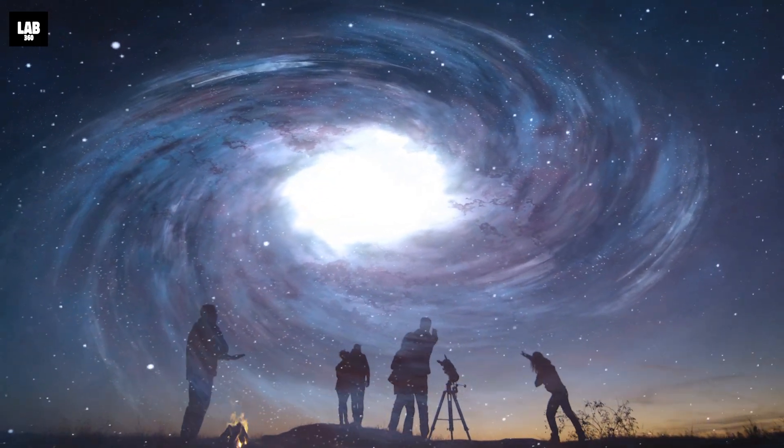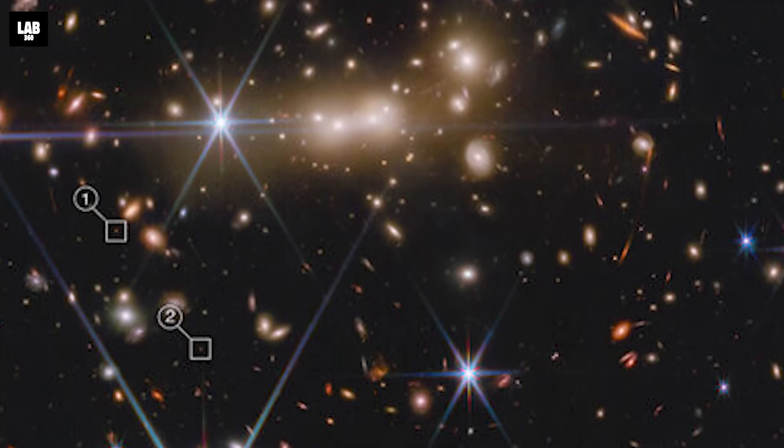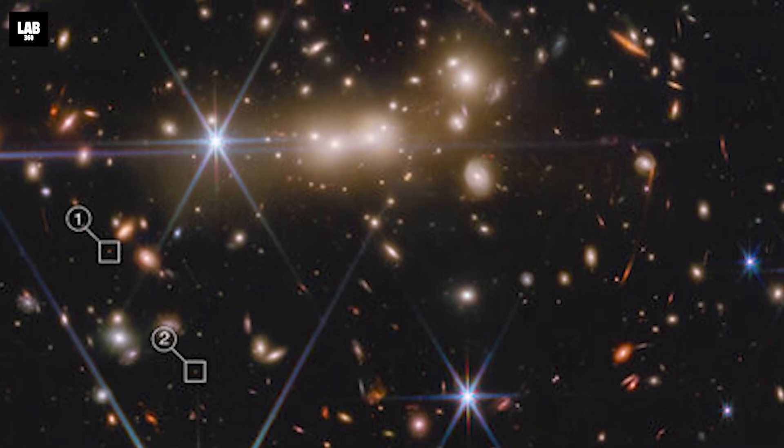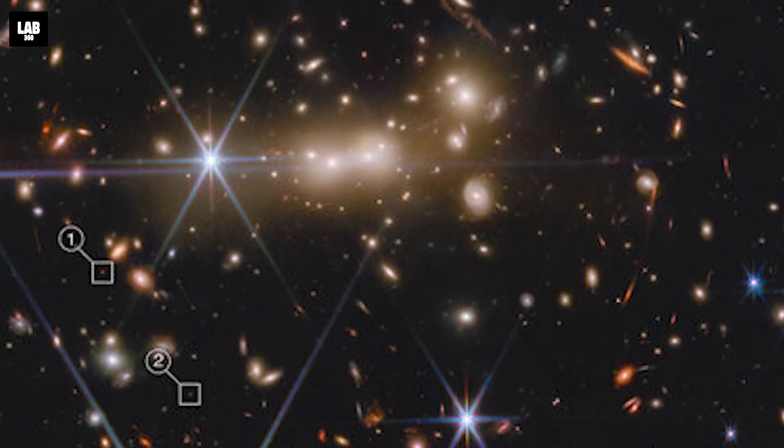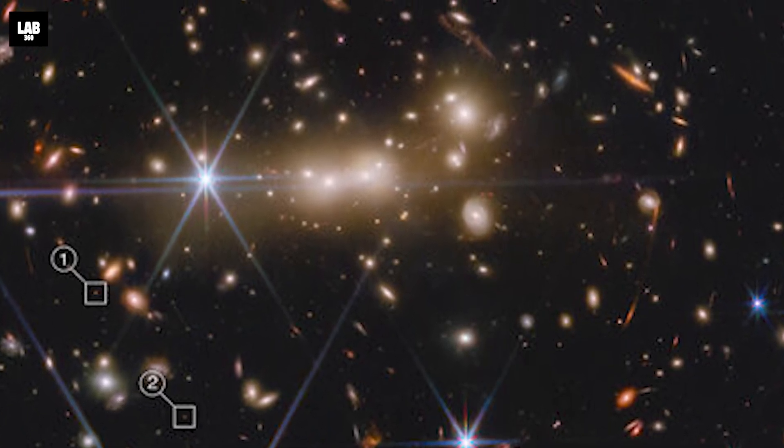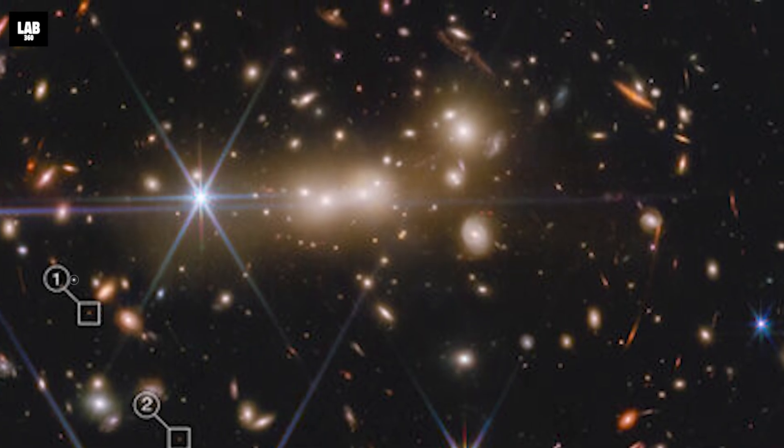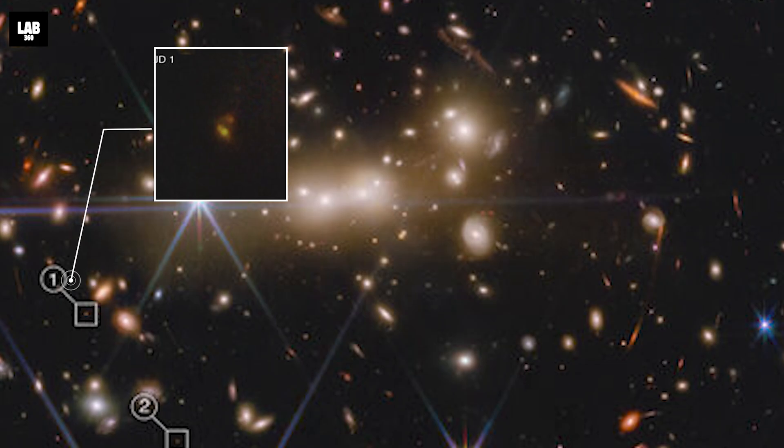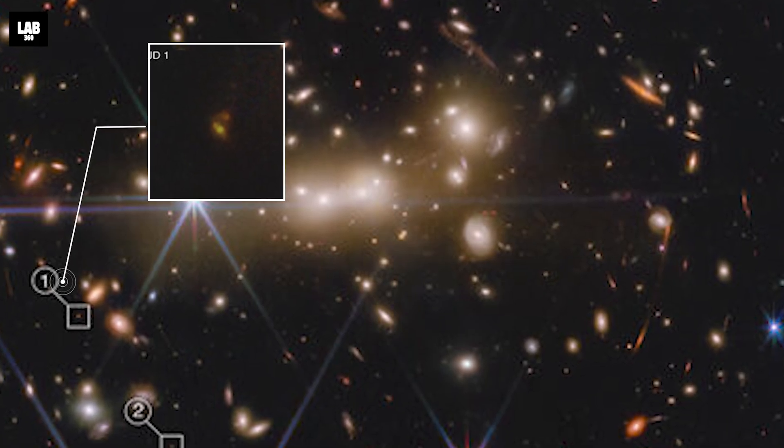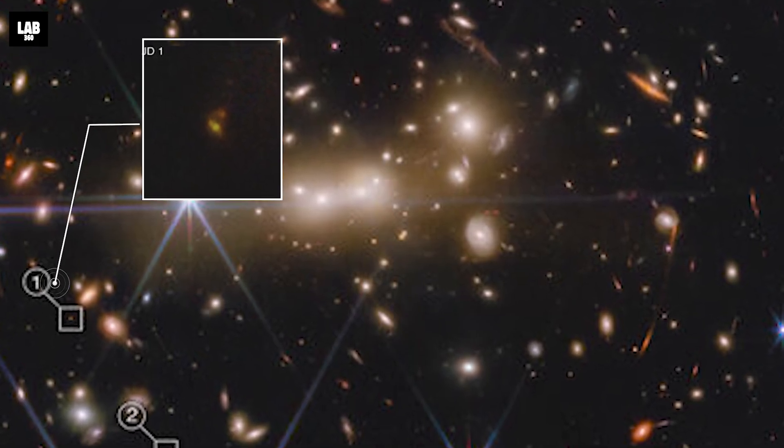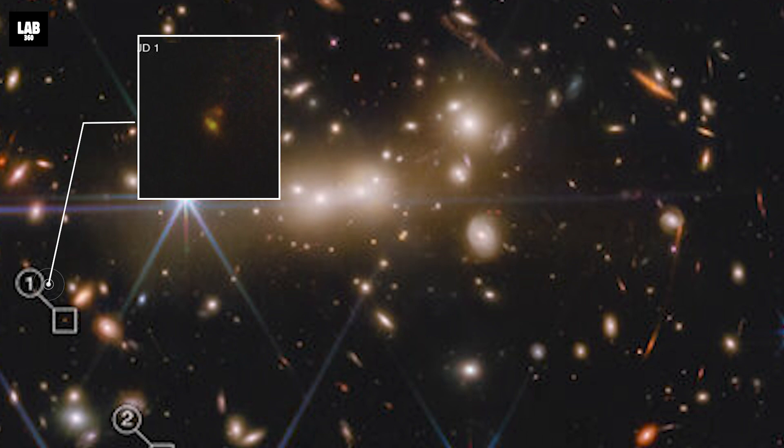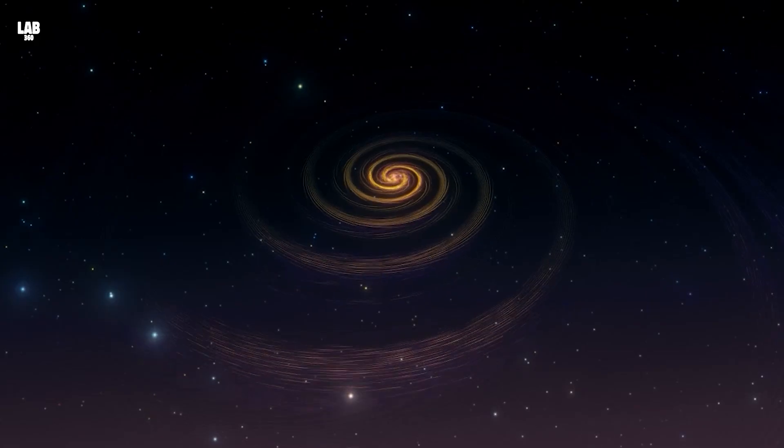However, there is a twist. MACS 0647-JD, or MACS JD, is an extremely distant object first observed about 10 years ago. At the time, it was considered to be the most distant galaxy ever observed, and it is still one of the earliest things we can study in detail with JWST.